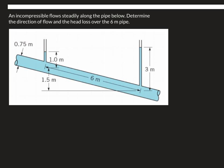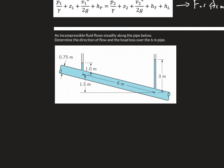An incompressible fluid flows steadily along the pipe below. Determine the direction of flow and the head loss over the six meter pipe.